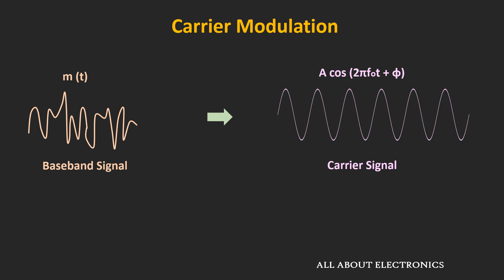For this frequency shifting, a high-frequency carrier signal is used. This carrier signal does not carry any information, but it helps in carrying the message signal — basically it acts like an envelope. Now, the carrier signal has three properties: amplitude, frequency, and phase.